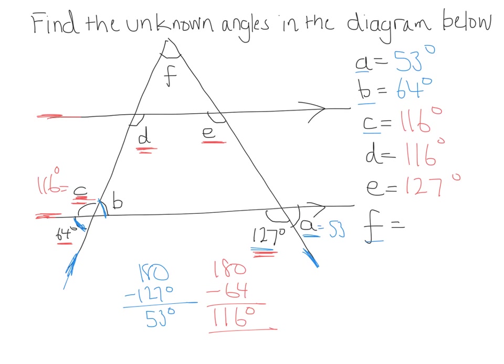Now, that just leaves F to figure out. Let's see, if that's 53 there, this one would have to be 53 because it's a corresponding angle, and this one would have to be equal to 53 because 53 there and 53 there, they're opposite to one another.